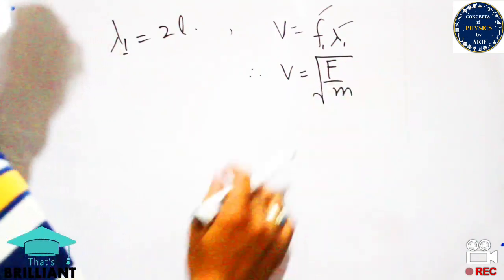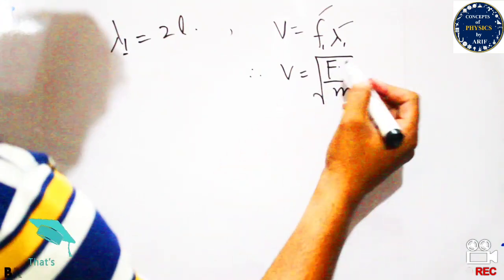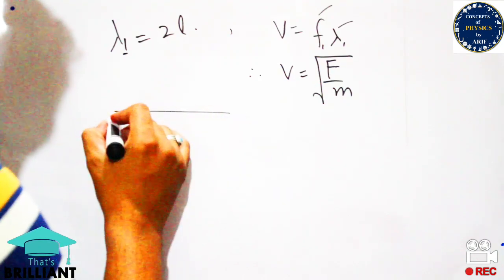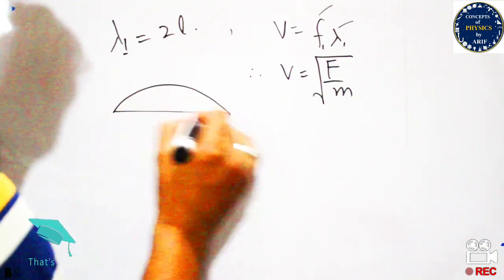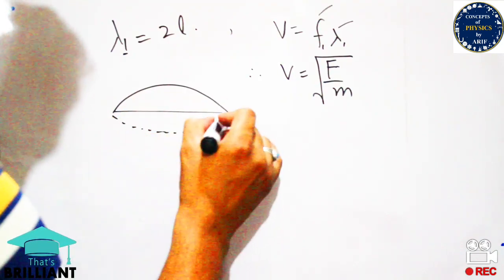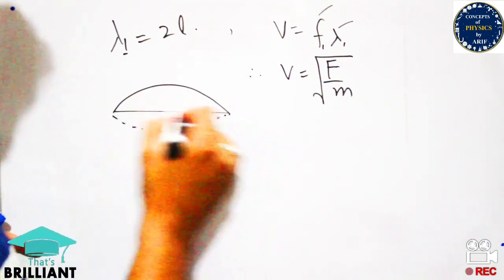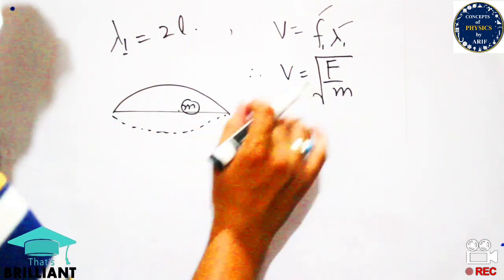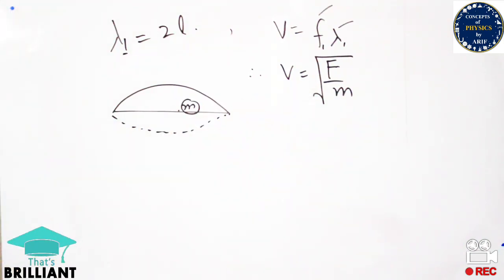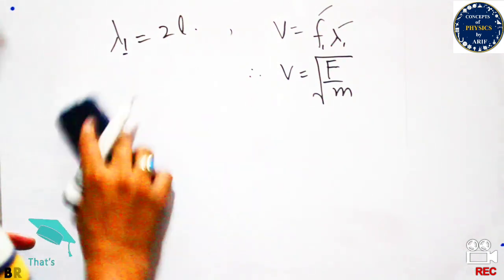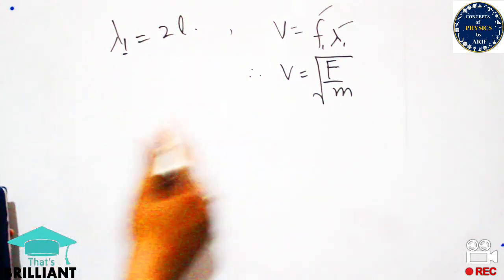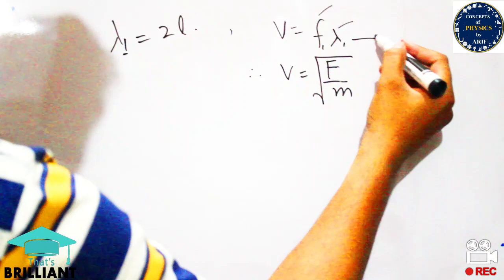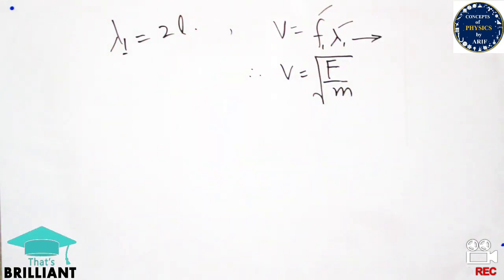We also know the formula for wave velocity in a stretched string: v equals the square root of F over m, where F is the tension or stretching force and m is the mass per unit length of the string. We are dealing with half the wavelength, so m here refers to the mass of the string.